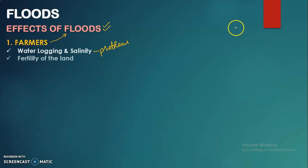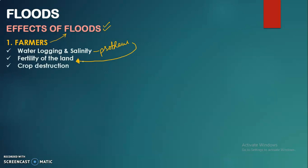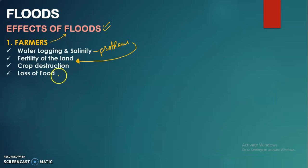As explained through the diagram, water logging and salinity affect land fertility. Another effect is crop destruction — when floods come and there is no protection, crops being grown by farmers are destroyed. This leads to loss of food, because the grown crop is damaged and farmers cannot produce food from that land.